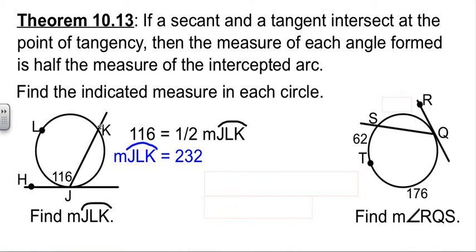If I wanted to find the smaller arc, all I would have to do now is subtract from 360. If I didn't know this arc over here, I could subtract from 180 with the angle, figure out what this angle is, and then the angle is half the arc.